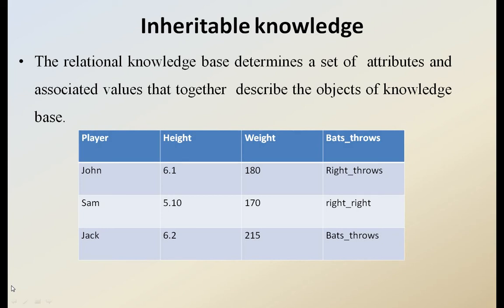It represents various kinds of attributes and the values of the attributes, and also describes the objects of the knowledge base. This table represents the relational knowledge and has four types of attributes: player, height, weight, and bat throws.